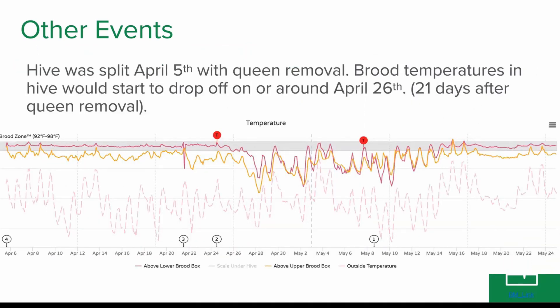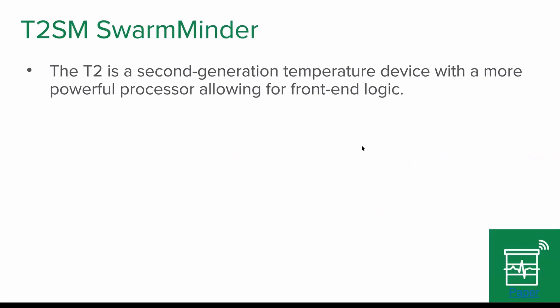The next thing was the swarm. Now we have this temperature event — the first time we are showing an event marked with a T. That T comes from the T2 device, where events are automatically marked if temperature events are taking place in the hive. The T2 is a second-generation temperature device with a more powerful processor allowing front-end logic, which means we can make decisions inside the device itself without going back to the BroodMinder database. There is intelligence in the device that can trigger alarms and perform certain actions.